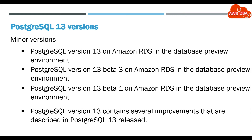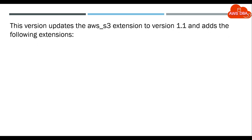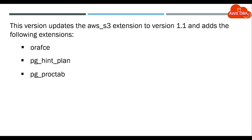PostgreSQL version 13 contains several improvements that are described in the PostgreSQL 13 release notes. This version updates the aws_s3 extension to version 1.1 and adds the following extensions: orafce, pg_hint_plan, pg_proctab, and val2json.